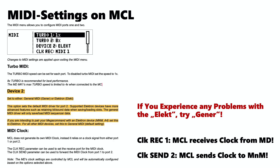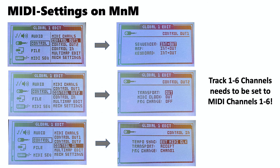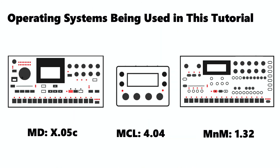Typically you would use the Electron MIDI driver on device number two while you're working with an Electron device such as the Monomachine. But if you experience any issues it's worth to give the generic driver a try. Here you can find a couple of screenshots of MIDI settings I used on the Monomachine. For this tutorial the latest operating systems were used and as mentioned before the generic MIDI driver for device number two on MCL.